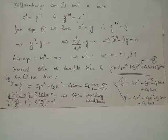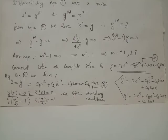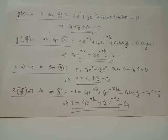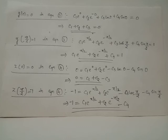We have now obtained expressions for y and z. Applying the boundary conditions: y of 0 equals 0 gives c1 plus c2 plus c3 equals 0; y of pi by 2 equals 1 gives c1 e^{pi/2} plus c2 e^{-pi/2} plus c4 equals 1; z of 0 equals 0 gives c1 plus c2 minus c3 equals 0; and z of pi by 2 equals negative 1 gives c1 e^{pi/2} plus c2 e^{-pi/2} minus c4 equals negative 1.